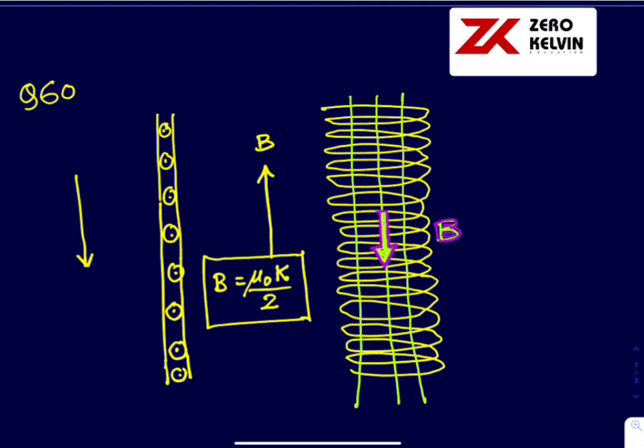In this problem, question number 60, the surface current to the width DL of a sheet is KDL. Number of turns per unit length of a solenoid is N. So the magnetic field due to the solenoid is mu0Ni.